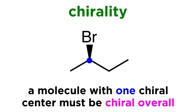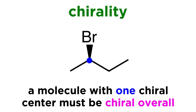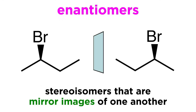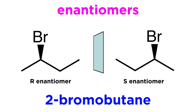If a molecule has precisely one chiral center, it is definitely a chiral molecule. It will have a mirror image that is a different molecule. Stereoisomers that are mirror images of one another are called enantiomers. Looking at 2-bromobutane, there is only one chiral center, so we have just these two possible stereoisomers, and these are enantiomers.